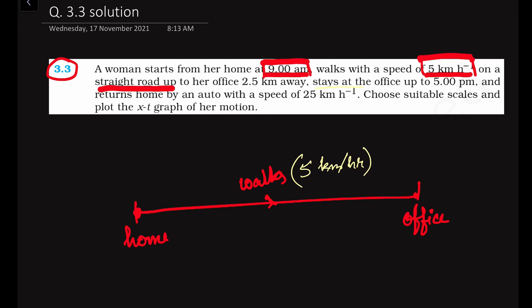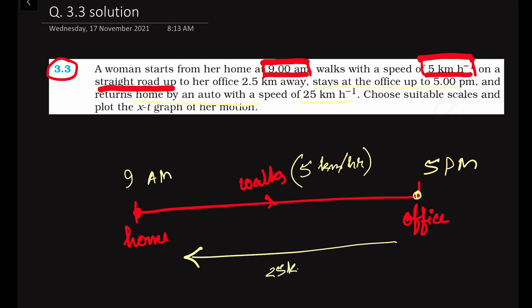She stays at the office up to 5 PM. At 9 AM she started, and she stays at the office until 5 PM. After 5 PM, she returns home by an auto with a speed of 25 km per hour. So she is returning to the home at a much higher speed.